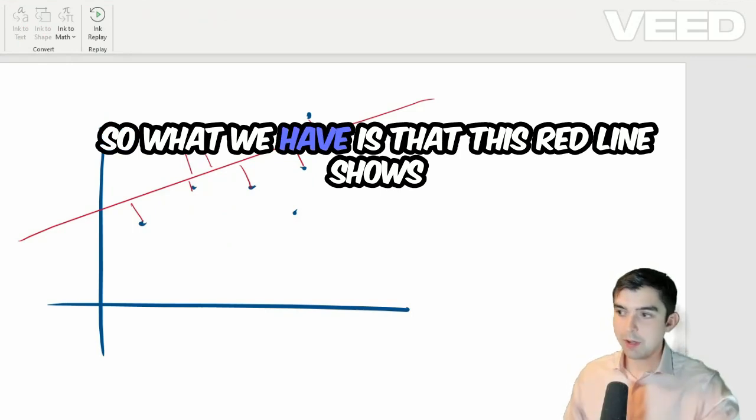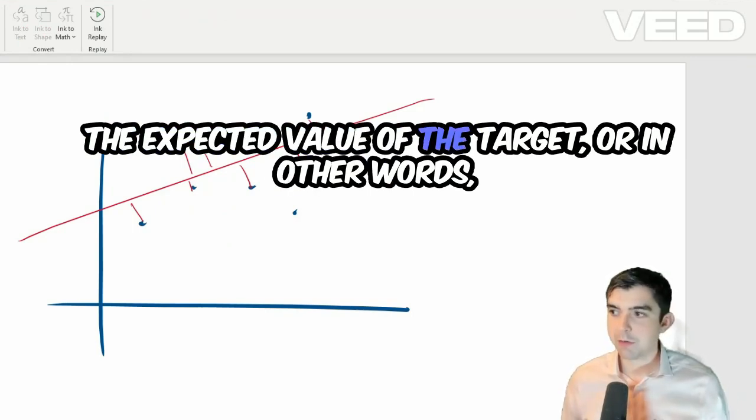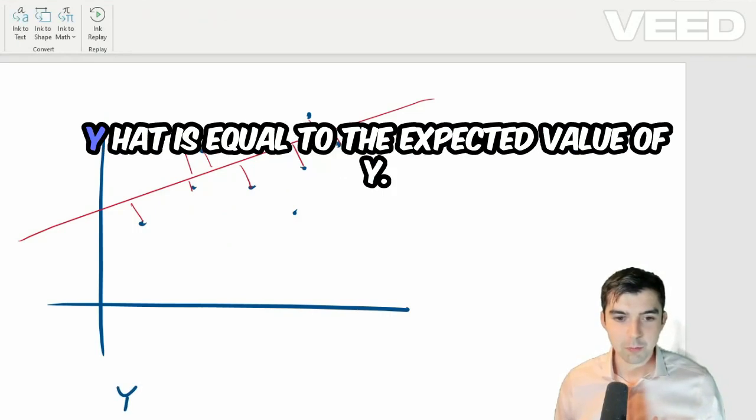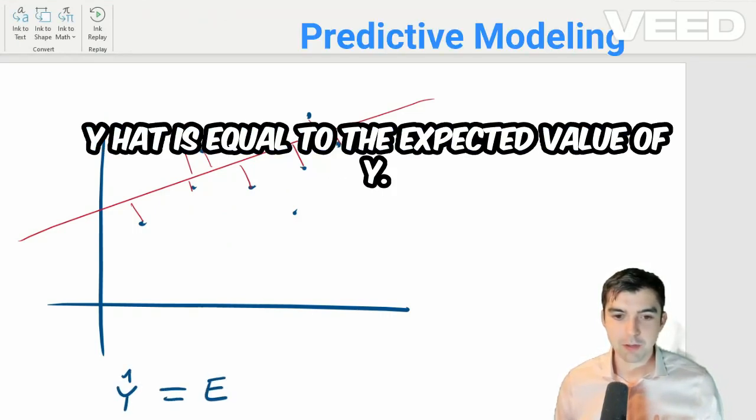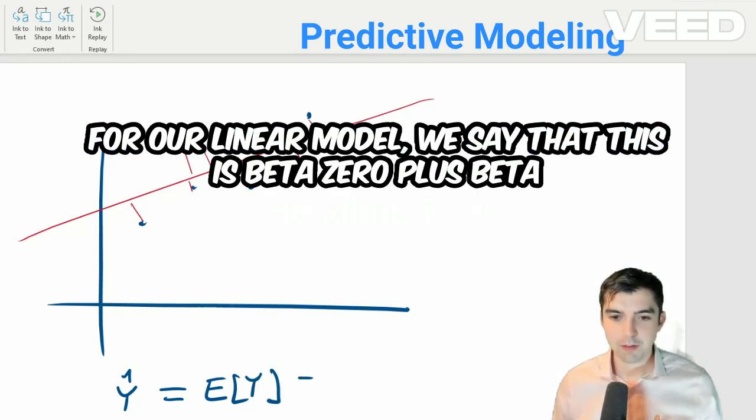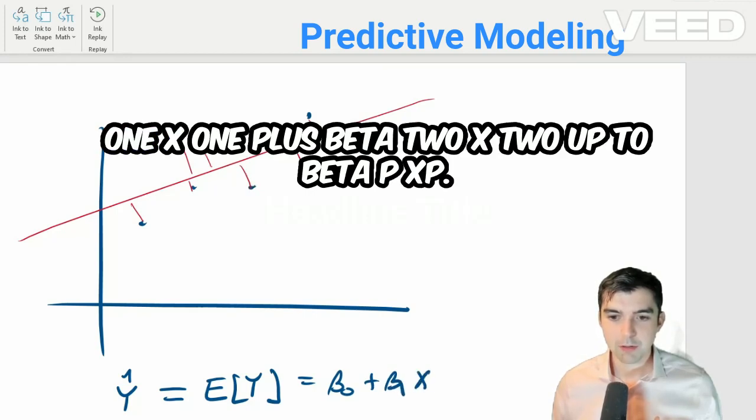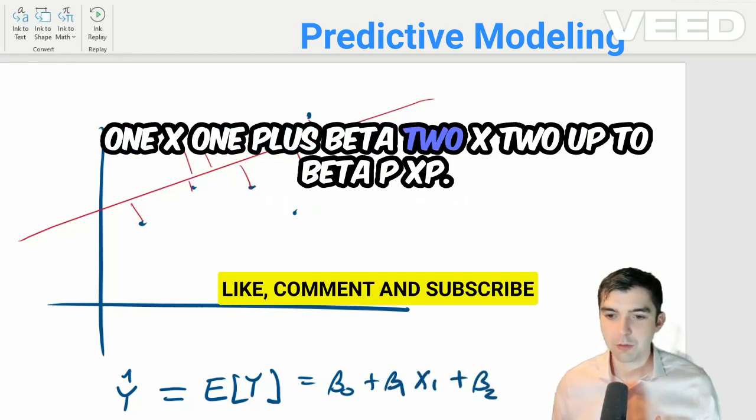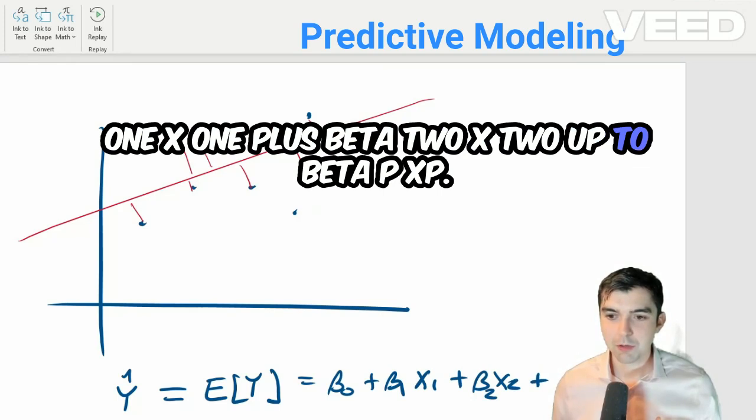So what we have is that this red line shows the expected value of the target. Or in other words, y hat is equal to the expected value of y. For our linear model, we say that this is beta 0 plus beta 1 x1 plus beta 2 x2 up to beta p xp.